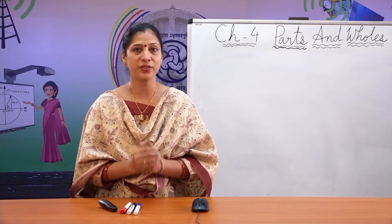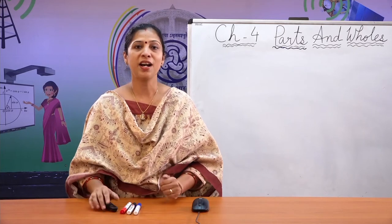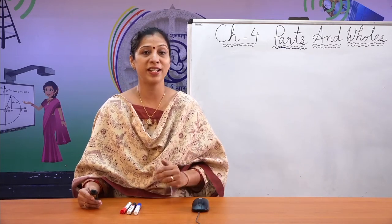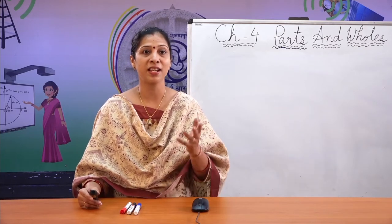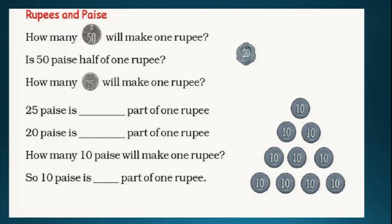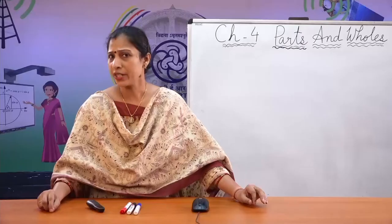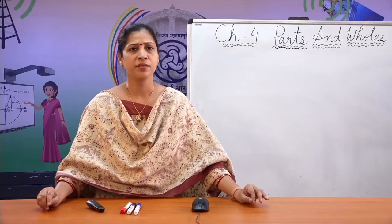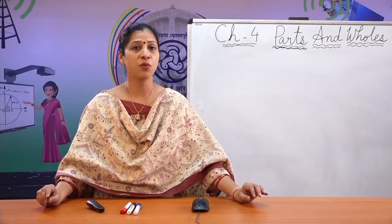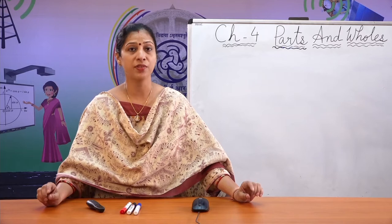This is the first activity — rupees and paise. You can see on the screen: how many 50 paise will make 1 rupee? Nowadays, we are not using these coins because we are using only starting from 1 rupee.